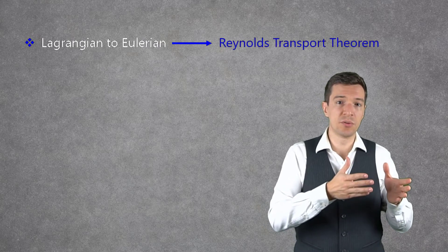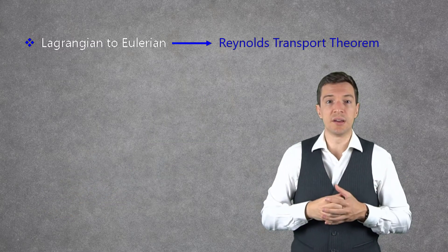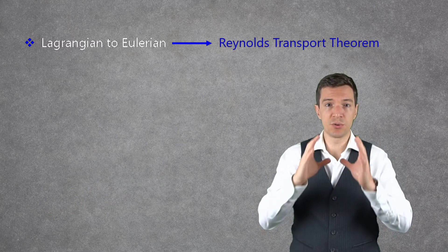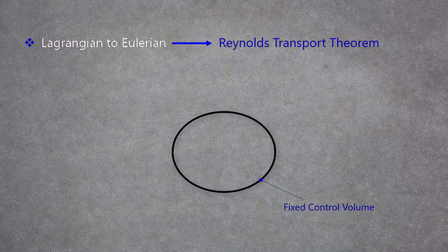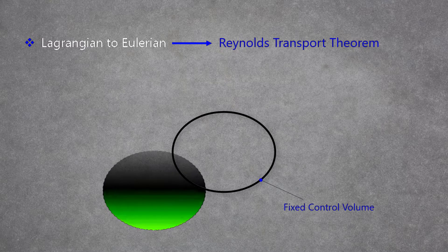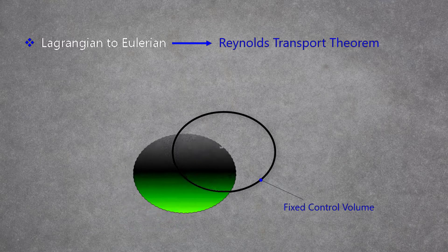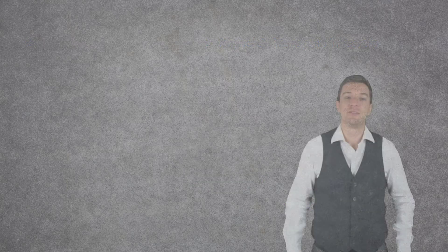In the Lagrangian point of view, we are following a moving parcel, while in the Eulerian framework, we are just looking at a fixed control volume. To help understand how we can relate these two frameworks, we can see that the moving parcel, at a certain instant of time, will suddenly occupy the same space of the control volume. The Reynolds Transport Theorem relates the Lagrangian and the Eulerian frameworks as follows.